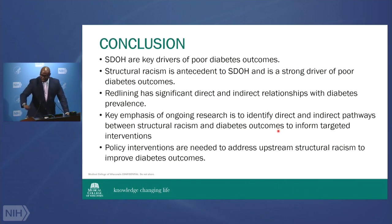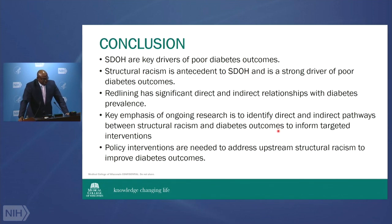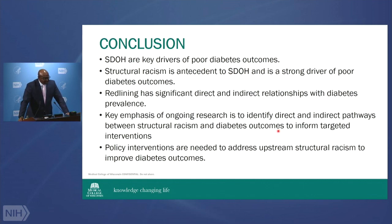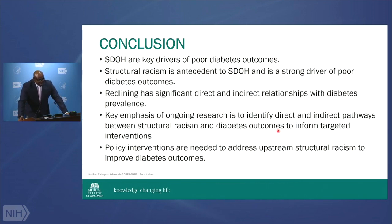In conclusion: social determinants of health are key drivers of poor diabetes outcomes — this is conclusive and well documented. Structural racism is antecedent to social determinants and is a strong driver of poor diabetes outcomes — we're so focused on social determinants that we don't pay attention to the upstream factors that drive them. Redlining has significant direct and indirect relationships with diabetes prevalence. The key emphasis of ongoing research should be to identify direct and indirect pathways and targeted interventions. We believe that policy interventions are needed to address upstream structural racism to improve diabetes outcomes. Thank you.